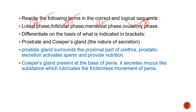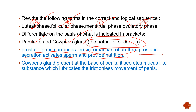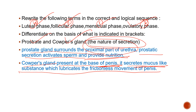Differentiate on the basis of the nature of secretion between the prostate gland and Cowper's gland — both are glands of the male reproductive system. The prostate gland surrounds the proximal part of the urethra, and its secretion activates the sperm and provides nutrition. The Cowper's gland is present at the base of the penis and secretes a mucus-like substance which lubricates the frictionless movement of the penis.